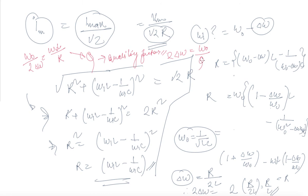The larger the value of Q, the smaller is the value of twice del_omega. As the quality factor increases, the bandwidth becomes smaller, meaning the resonance peak is sharper. A high quality factor means the circuit reaches resonance over a very narrow frequency range.